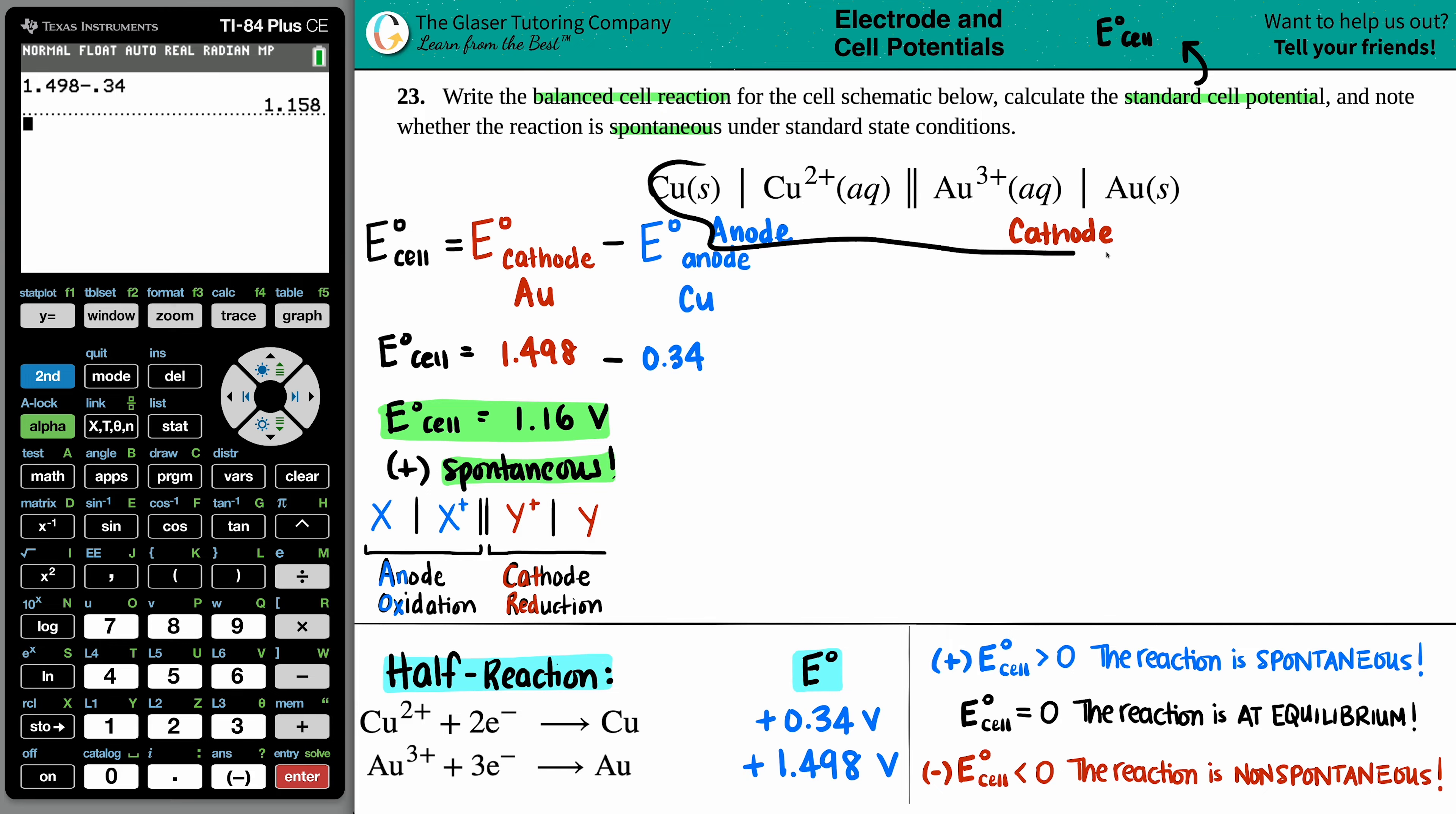When we're looking at this schematic, just know that it's always the first part of your half reaction going into your second part. So Cu is going into Cu2 plus. Au3 plus is going to the Au. Cu solid is going into Cu2 plus aqueous. And the other half reaction is Au3 plus aqueous going into Au solid.